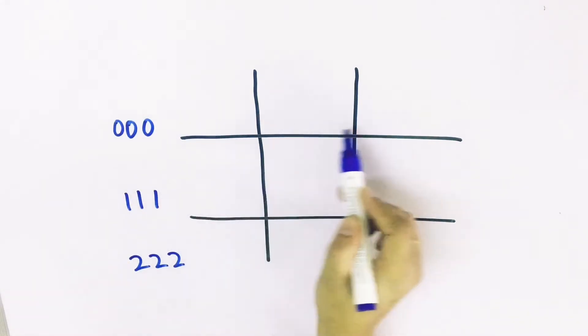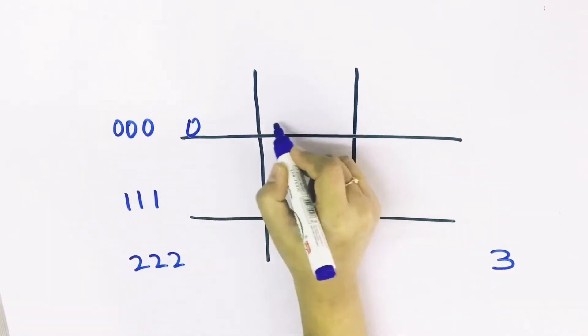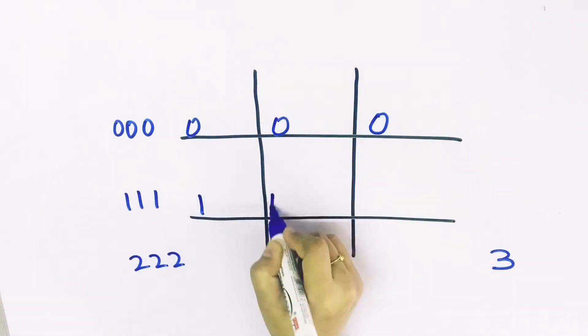We'll place the zeros in the first row, ones in the second row, and twos in the third row. Then we'll put a three like this. Now let's start placing the zeros. So we put zero in the first row, one in the second one, two in the third row.